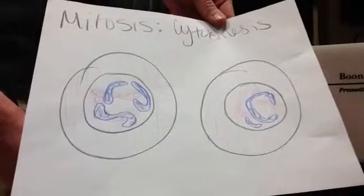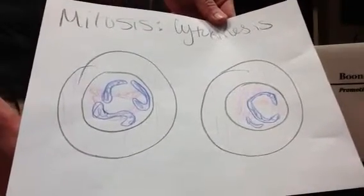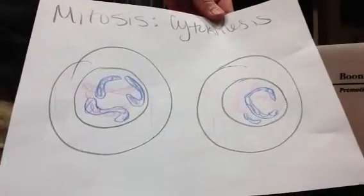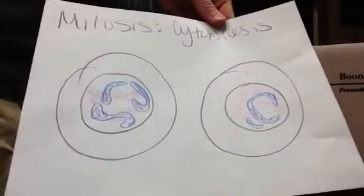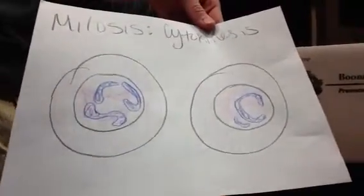So in cell reproduction, there is meiosis and mitosis. Mitosis occurs in body cells, but meiosis occurs in sex cells.